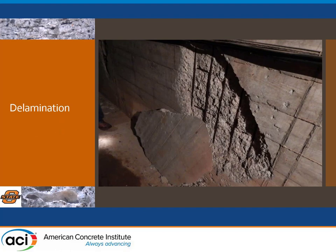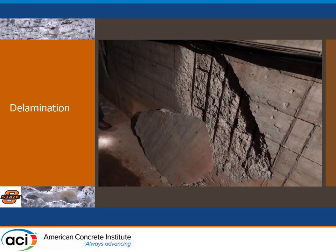This is where we had the most fun — basically taking off these huge delaminated chunks that were coming right off in our hands, then looking at what was going on behind. What was really interesting is that when we started taking off those delaminated chunks, not only did we see rebar, but we saw a ton of salt accumulation behind. Those sulfates were coming in but not quite reaching the surface — they were stagnating right behind that first cover of concrete, about the first two to three inches, doing their most damage there.